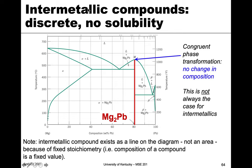If you have a line compound like this, what we mean by a line is that it has a specific stoichiometry. Intermetallic compounds have discrete composition and no solubility — you can't add more lead or more magnesium and maintain this composition. If you change the composition and add more magnesium, you start to precipitate alpha; if you add more lead, you start to get beta. That's why we sometimes call this a line compound. It exists as a line, not an area, because it has that fixed stoichiometry.